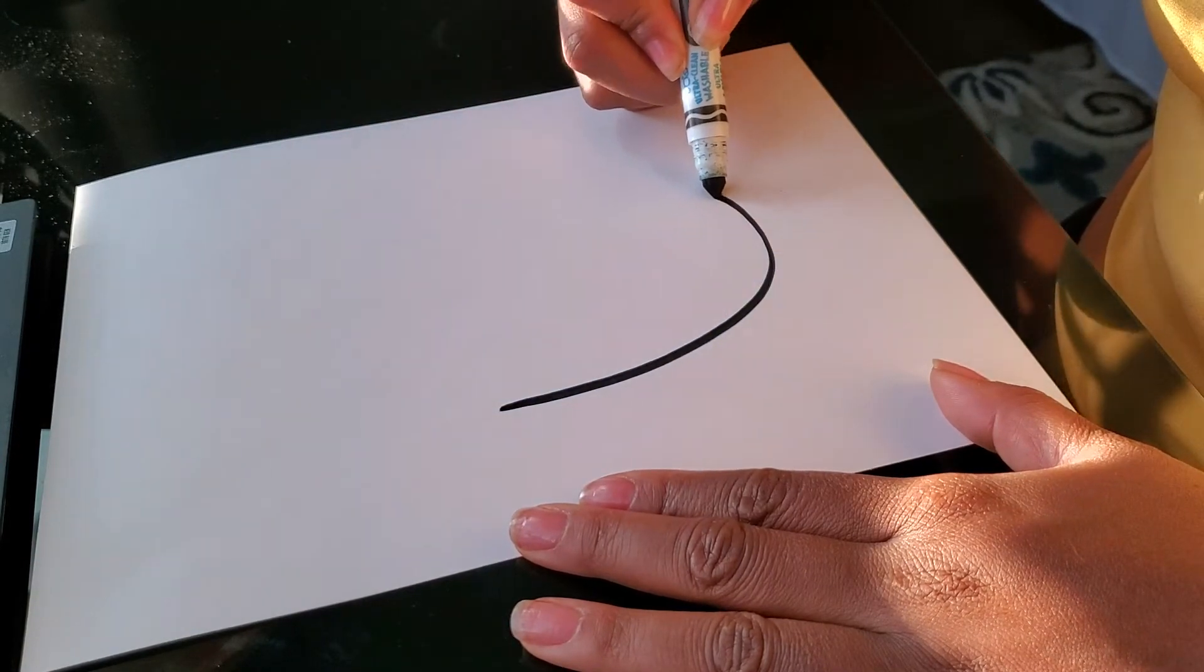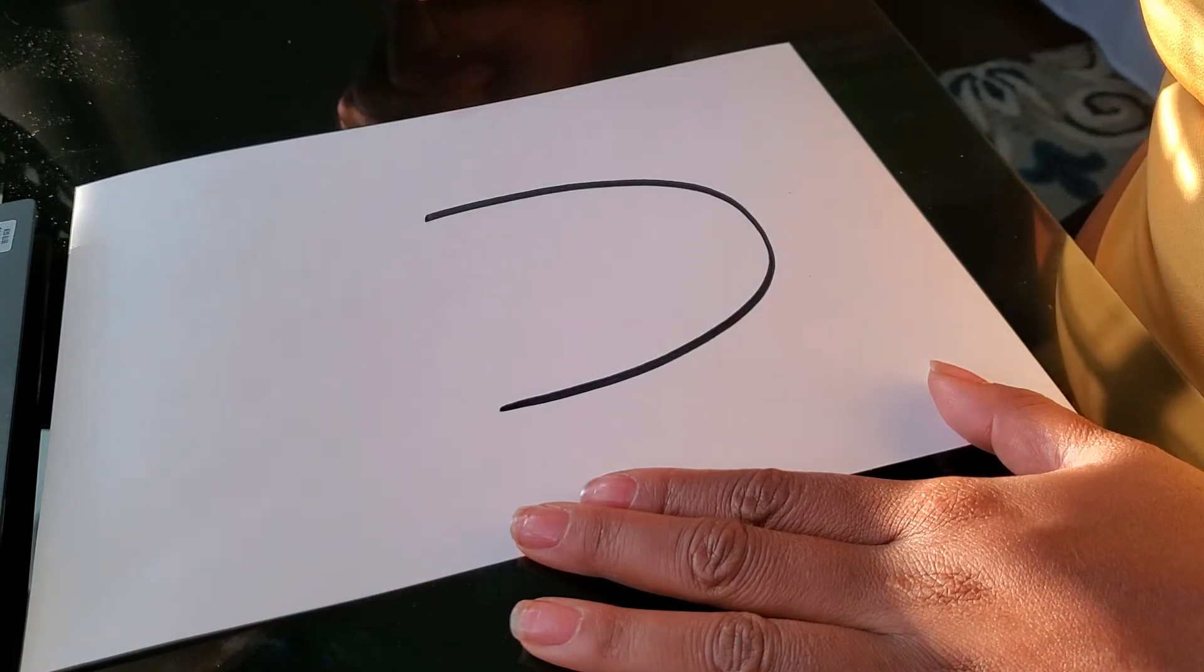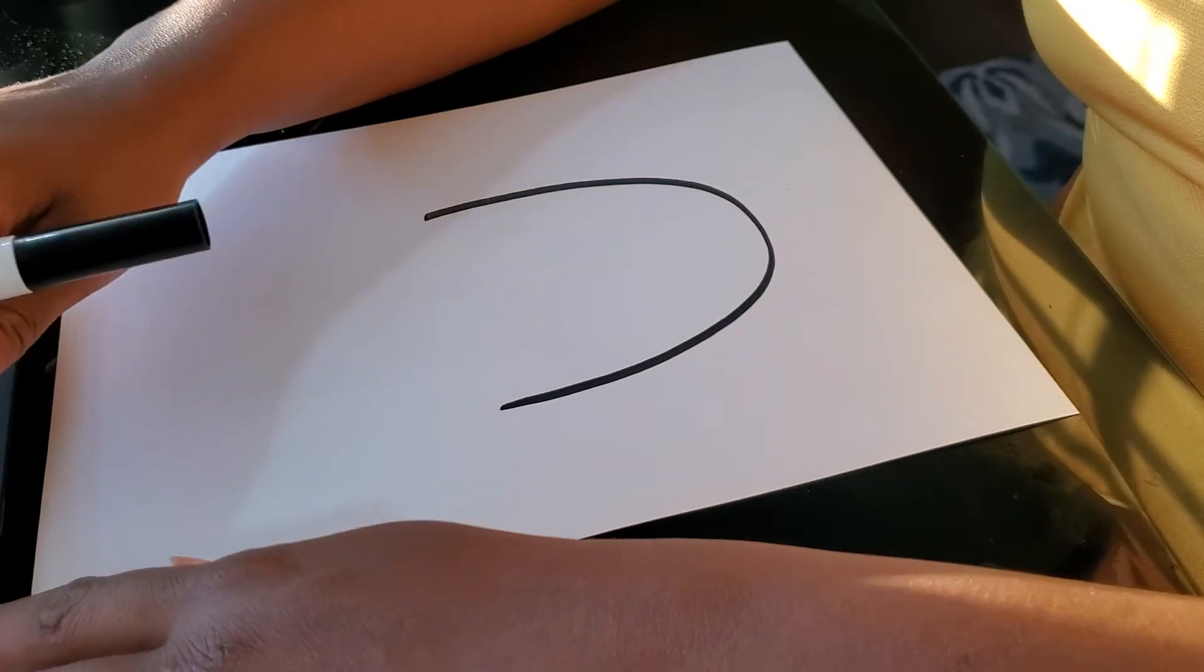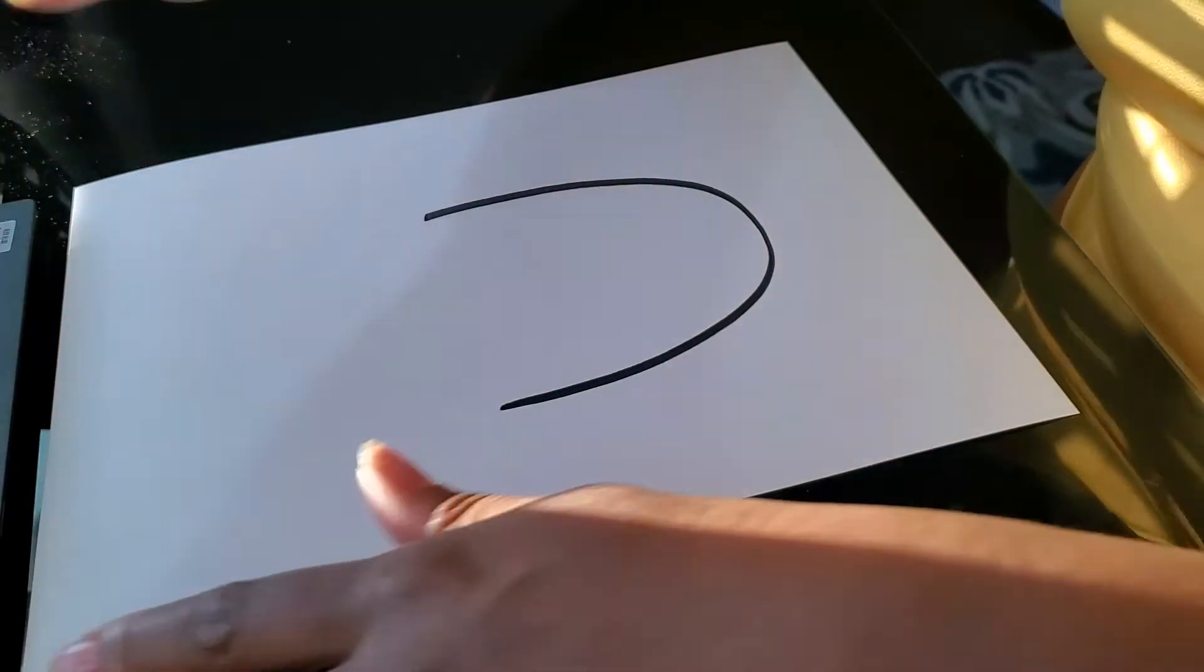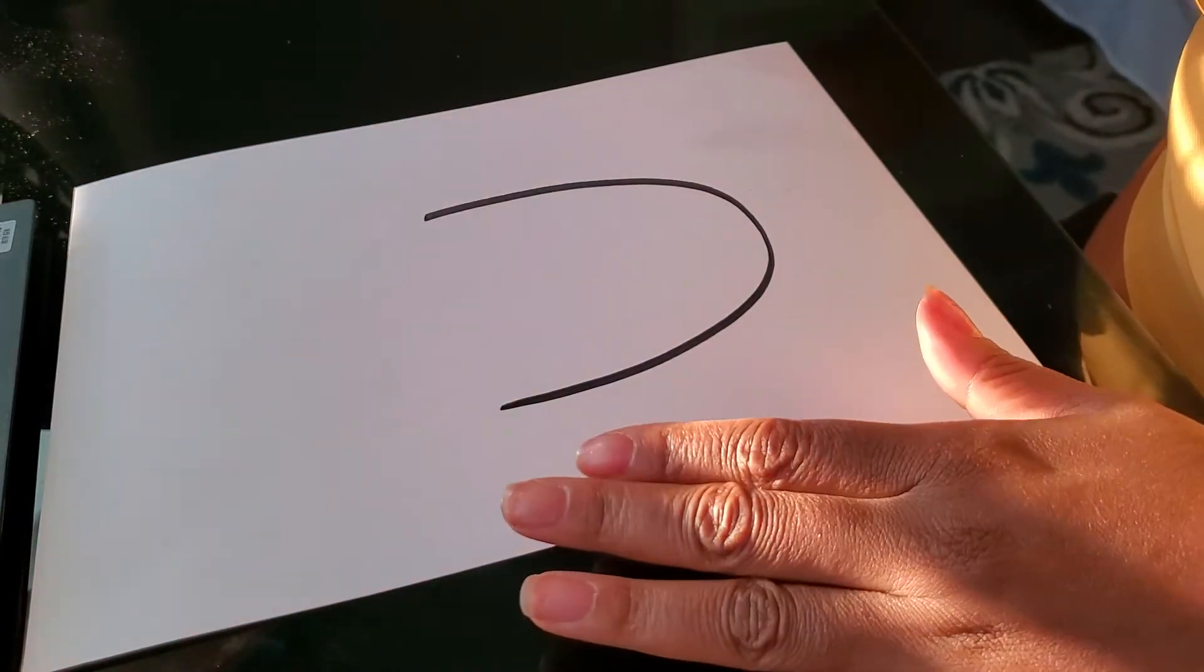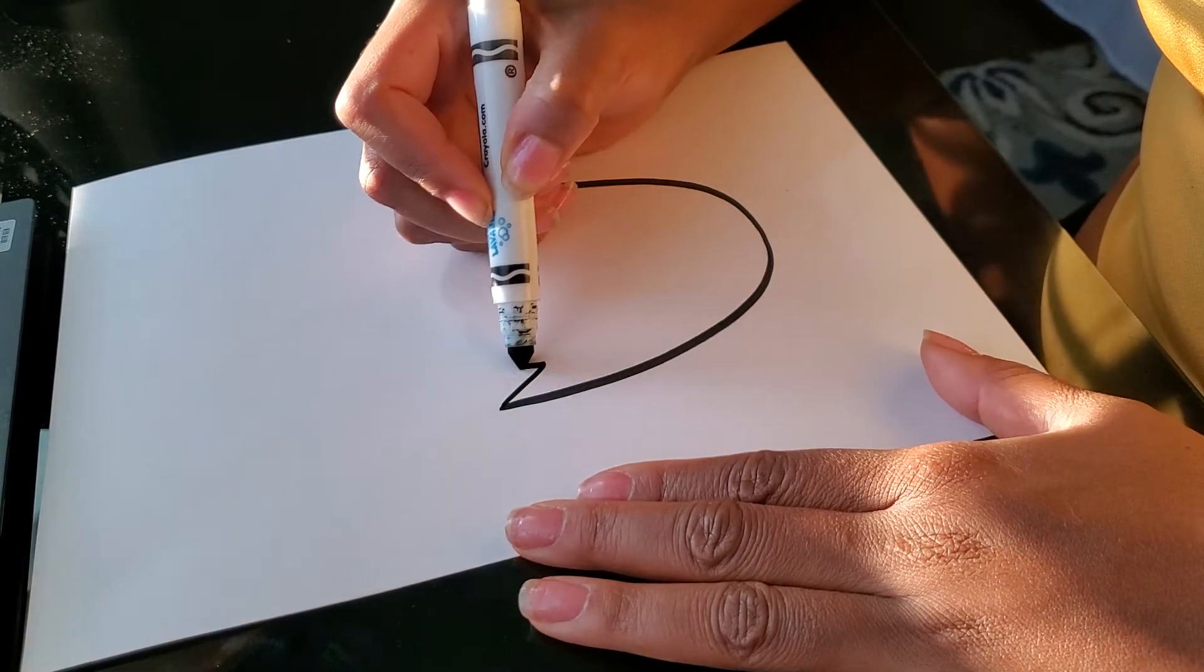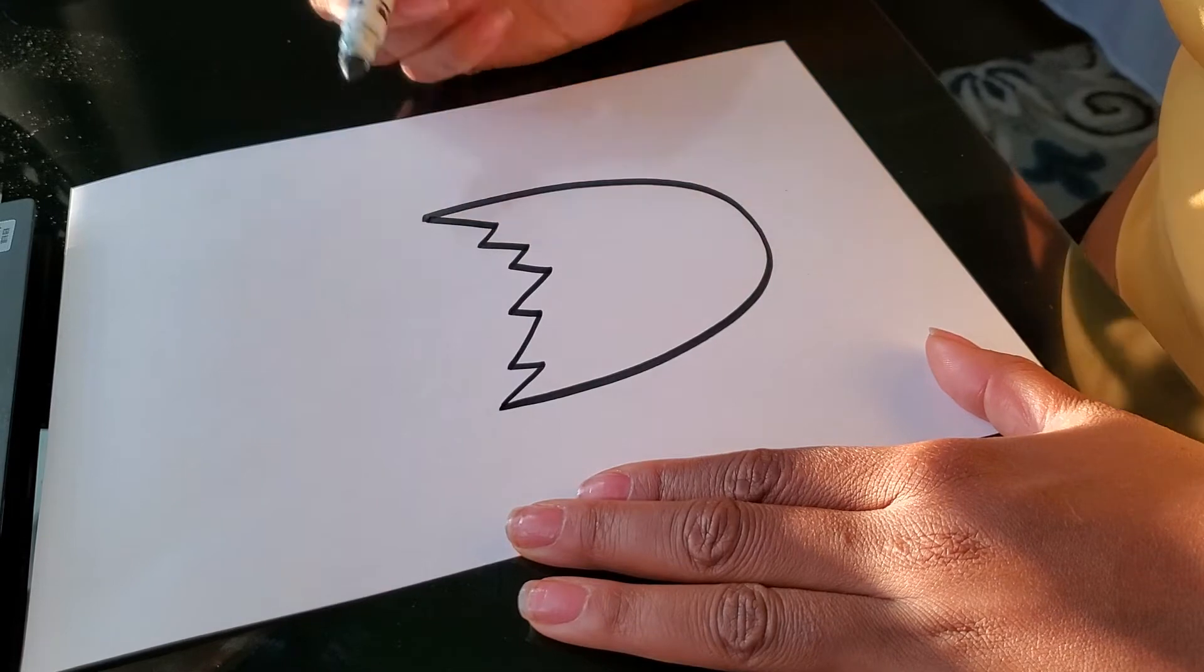First I'm drawing a letter U shape. Did you draw your letter U shape yet? Then, I'm drawing a zigzag line to show that the egg is broken.